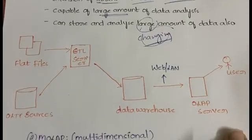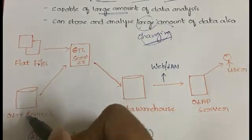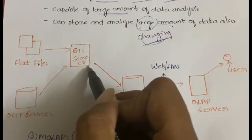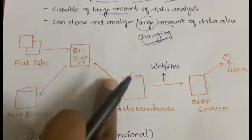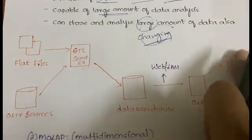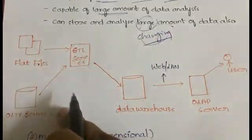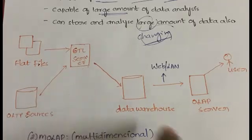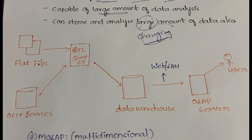To understand ROLAP with an example: flat files and OLTP sources are combined and fed into the ETL server. From the ETL server the data goes to the data warehouse, and from the data warehouse to the OLAP server, and from there to the user. In ROLAP we use an ETL server, whereas in MOLAP we use a multi-dimensional database instead.